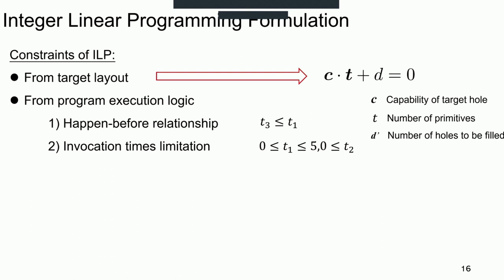The constraints of ILP contain two types. One is from target layout, which means using primitives to occupy holes until reaching the target hole. We construct the equation where C represents the capability, T is the invocation amount of primitives, and D is the number of holes to be filled. The other type of constraints is from execution logic, including the happen-before relationship and the limitation of invocation times.